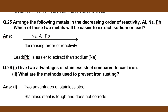Number 25. Arrange the following metals in decreasing order of reactivity: Al, Na, Pb. Which of these metals will be easier to extract — sodium or lead? Na, Al, Pb is the decreasing order of reactivity. Lead (Pb) is easier to extract than sodium (Na).